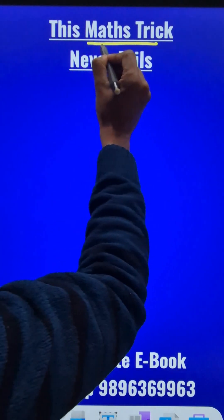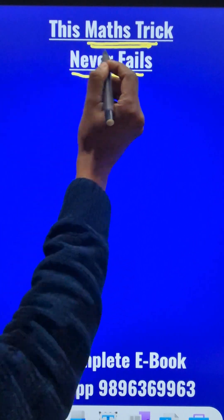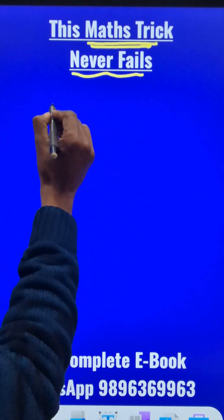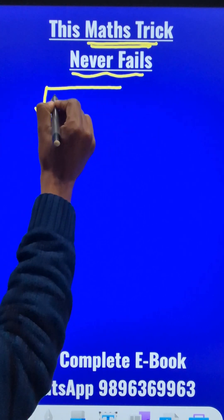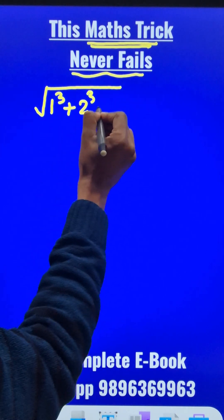Here is an amazing mathematics trick for quicker maths that never fails. Suppose you have the square root of the sum of cubes of numbers like 1³ + 2³ + 3³.